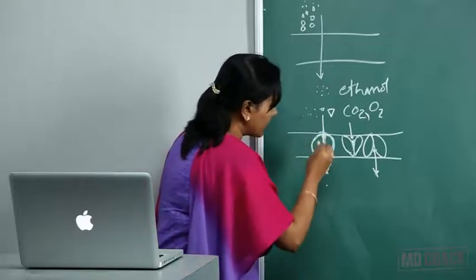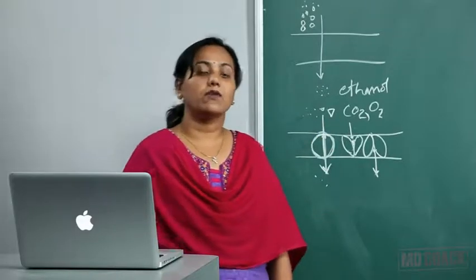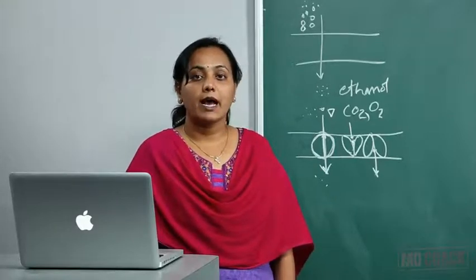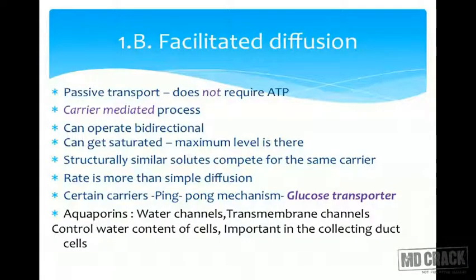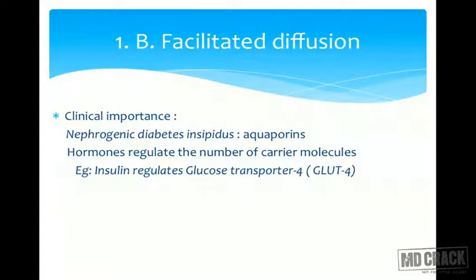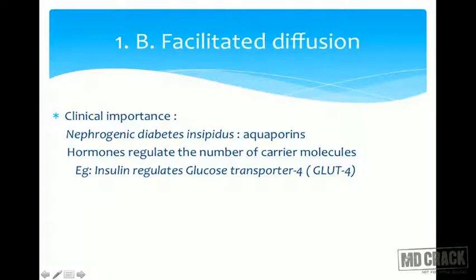This type of transport is also seen in aquaporins, which regulate the amount of water within the cell and control the water content of cells. They are very important in the collecting ducts of the renal tubules. Clinically, aquaporins are affected in nephrogenic diabetes insipidus. Many hormones, like insulin, regulate the number of carrier molecules and thereby affect glucose transport.